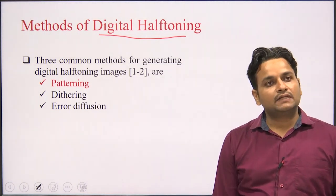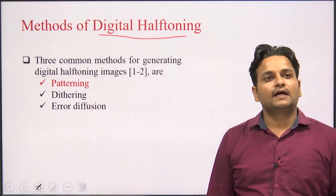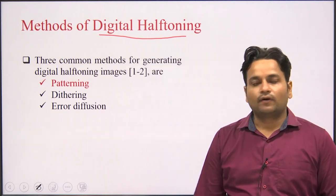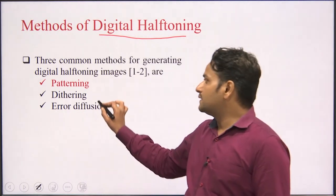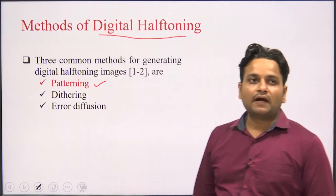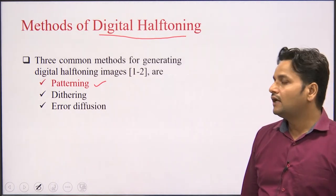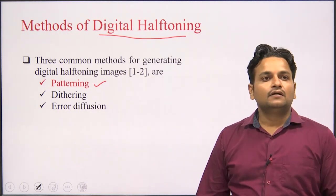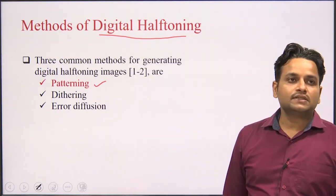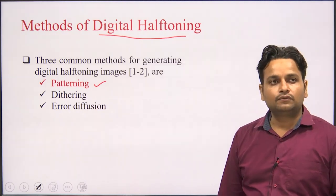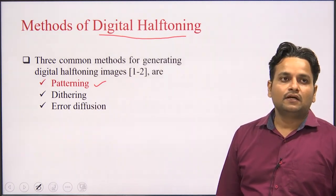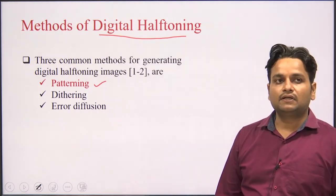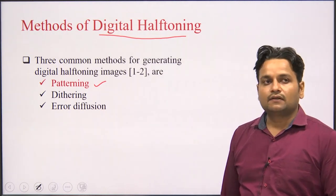In digital image processing, digital halftoning is very important, while analog halftoning is not that much important. In the previous lecture we already covered the patterning portion, where Bayer's pattern was used to transmit the image. By using the patterning process you can obtain the digital halftone, and after that the digital image can be identified and further transmitted for the processing frame.